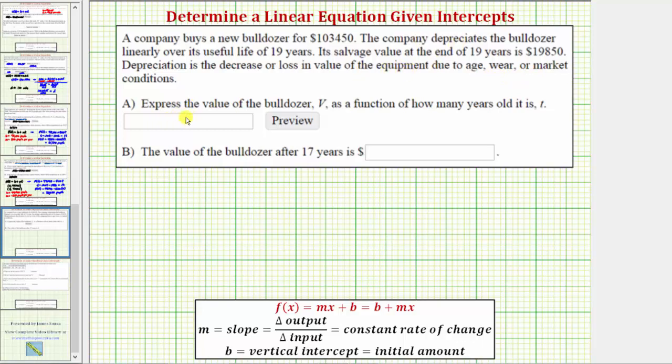For part A, we're asked to express the value of the bulldozer, V, as a function of how many years old it is, which is t. Often a linear function is given in the form of f(x) equals mx plus b, or f(x) equals b plus mx, where x is the input variable, m is equal to the slope, which is the constant rate of change, and b is the vertical intercept, which is also the initial or starting amount.